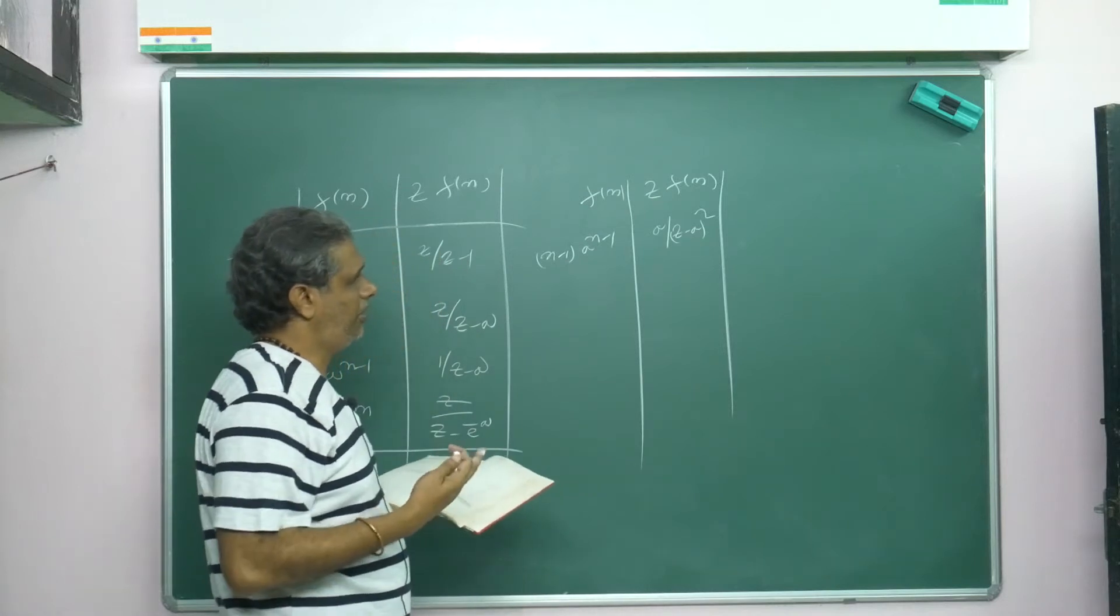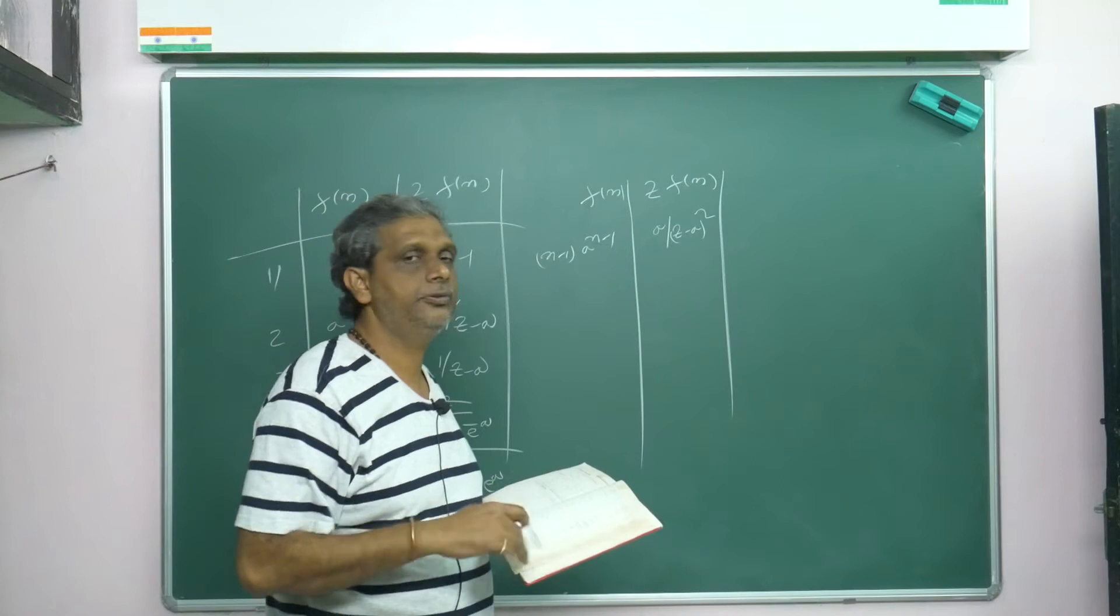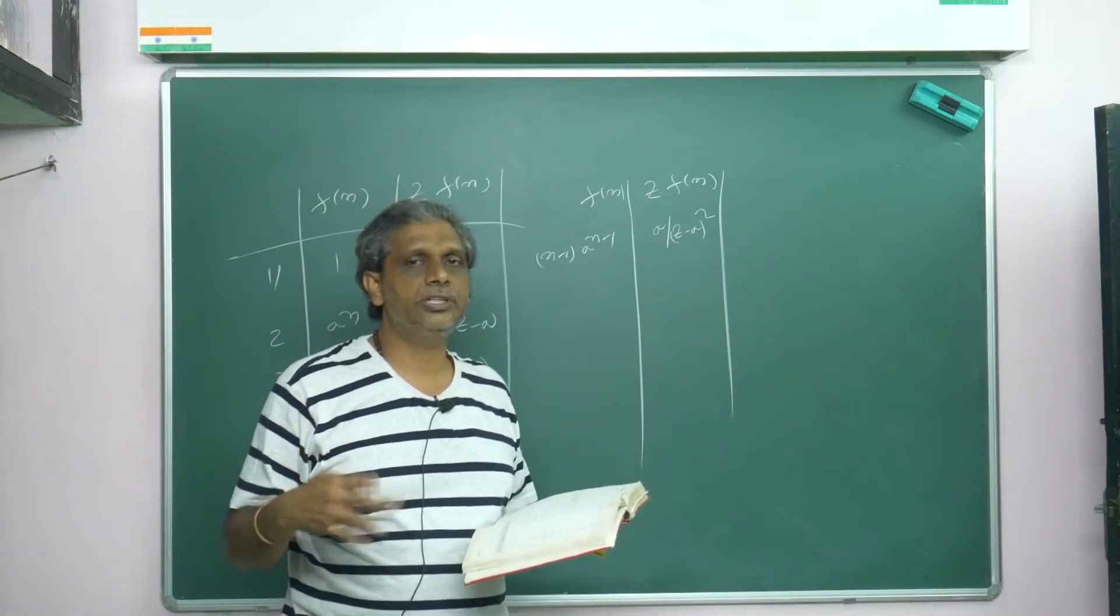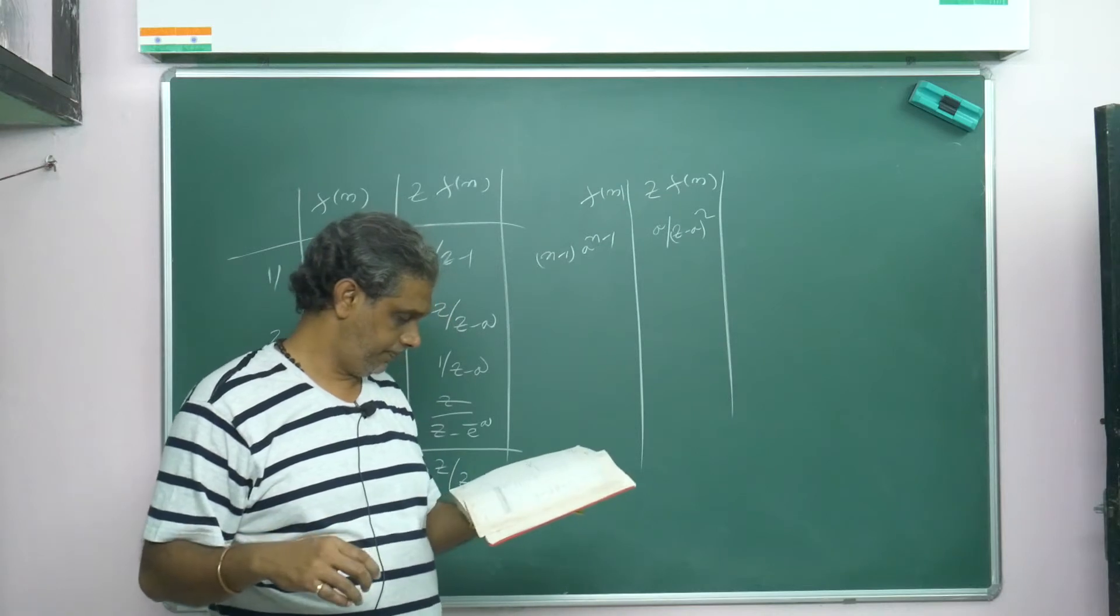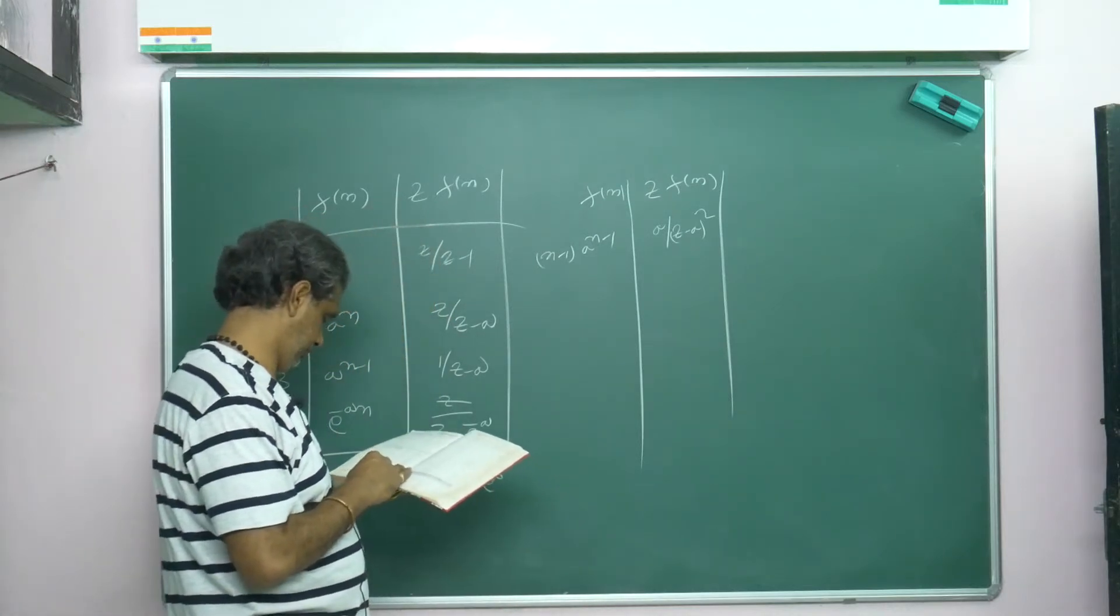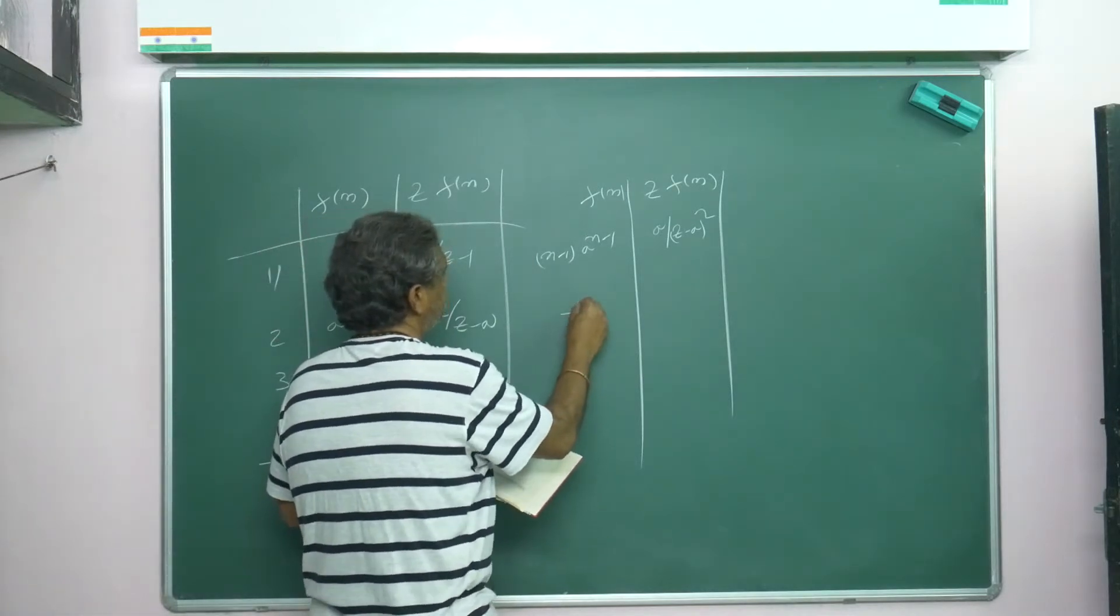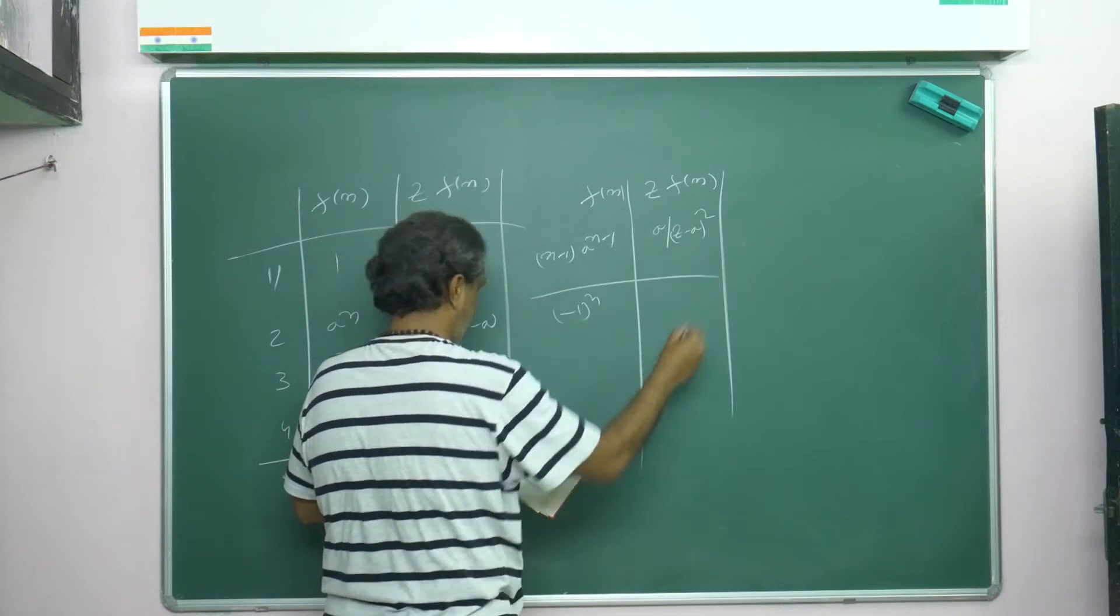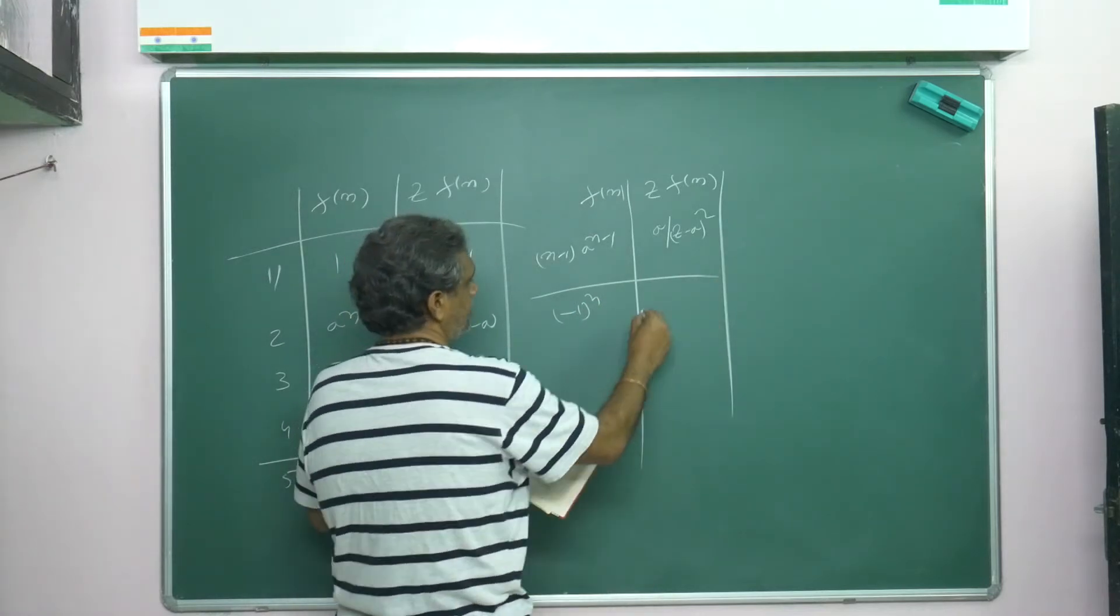I don't remember actually. I never do this repeatedly. This is Laplace transforms means we do so many times, but Z-transforms rarely we do. I don't remember the formulas. While doing the problem, if I ask, you have to tell me. Then Z{(-1) to the power n} or (-1) to the power k, that formula is z/(z+1).